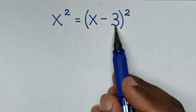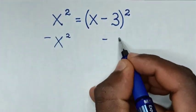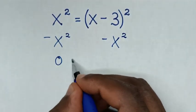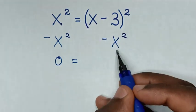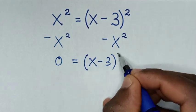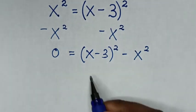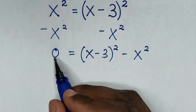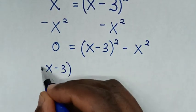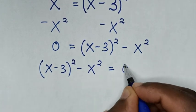First we take the x squared to this side, so we'll subtract x squared from both sides. Then x squared minus x squared is 0, equal to x minus 3 bracket squared minus x squared. Taking this to the left side and 0 to the right side, we get x minus 3 bracket squared minus x squared is equal to 0.